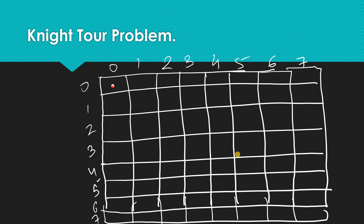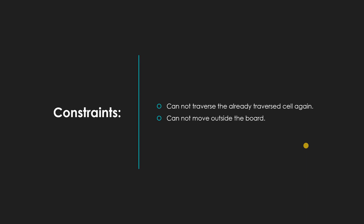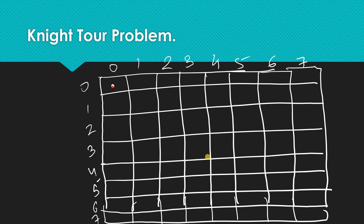Let's see how the solution will look. If we are starting from this position and make our first move here, second move here, third move here, fourth move here — and keep on making moves like this — at the end we'll be able to occupy the whole board. The constraints are: we cannot traverse an already-traversed cell again, and we cannot move outside the board.